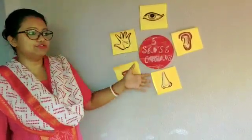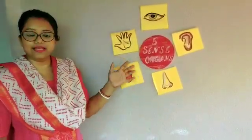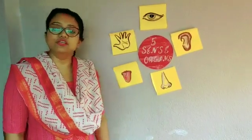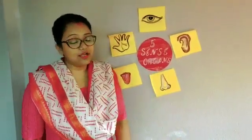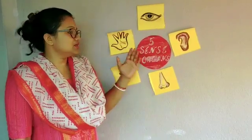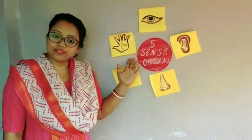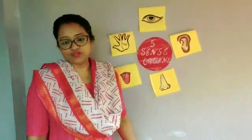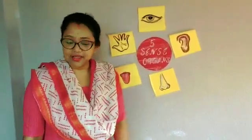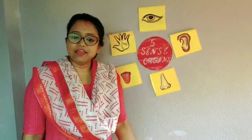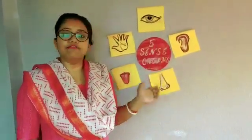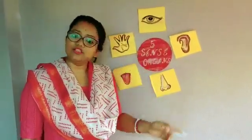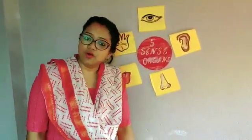Class, you have to revise and learn these things. DSO is an oral subject, so there is no need to write anything. If you want to draw, you can draw the five sense organ pictures. Okay? Thank you.